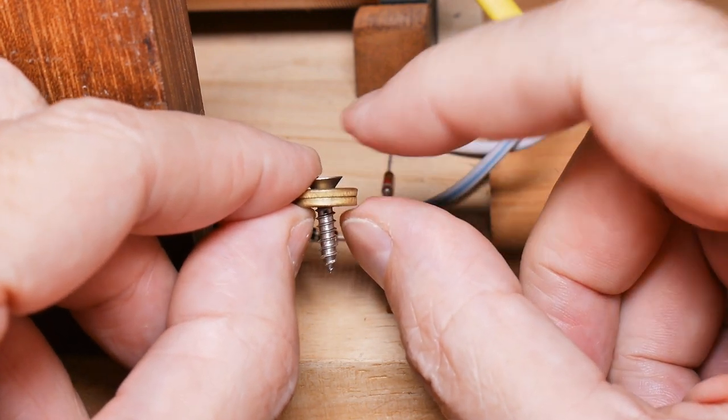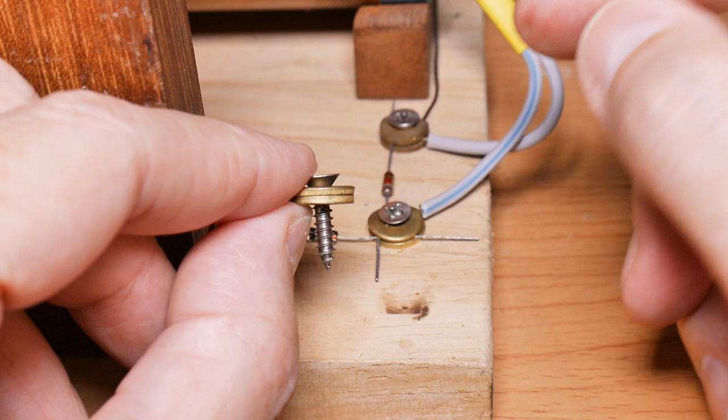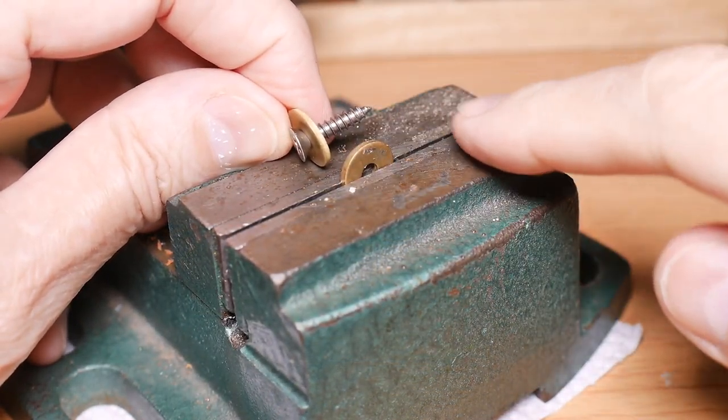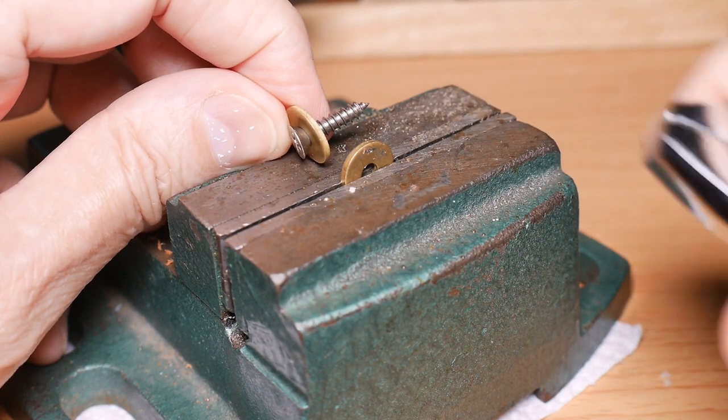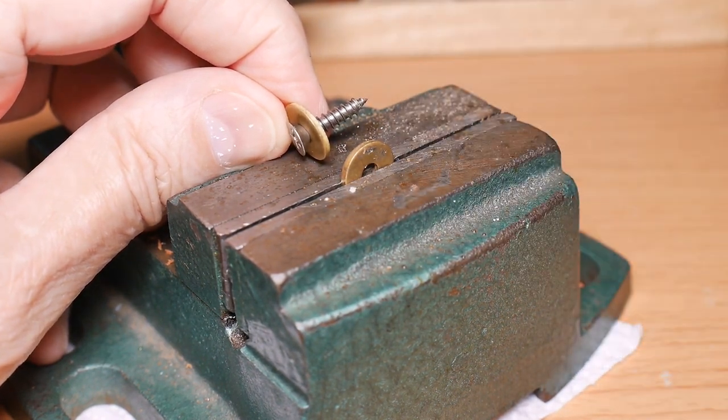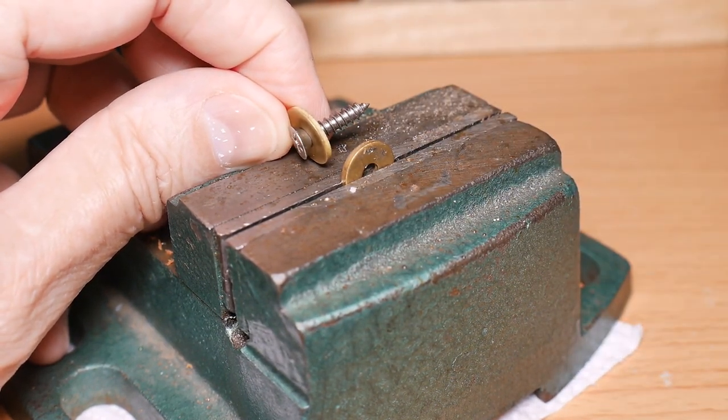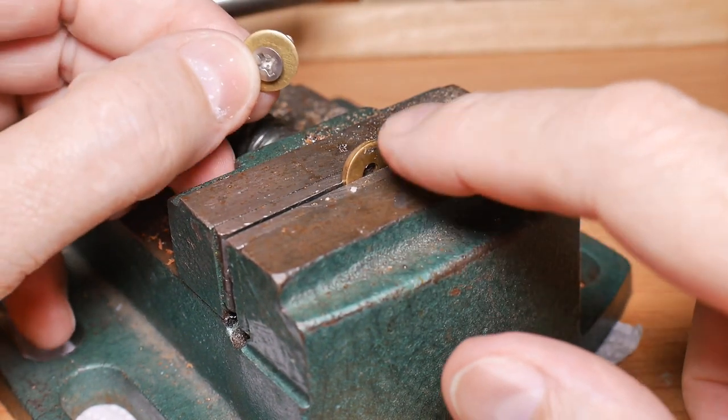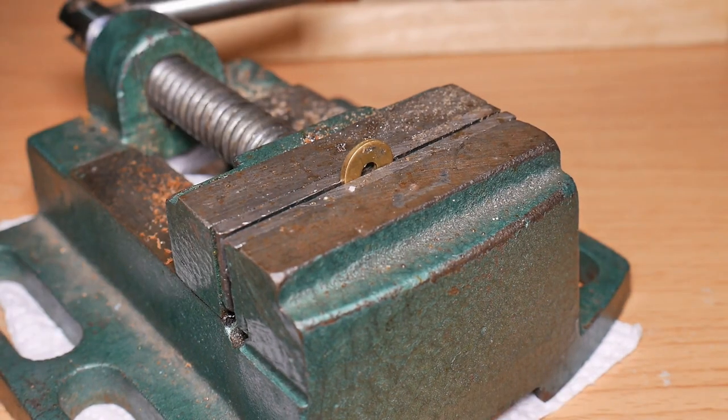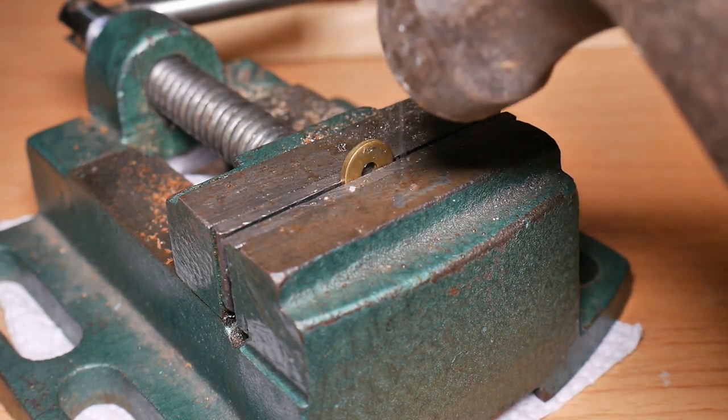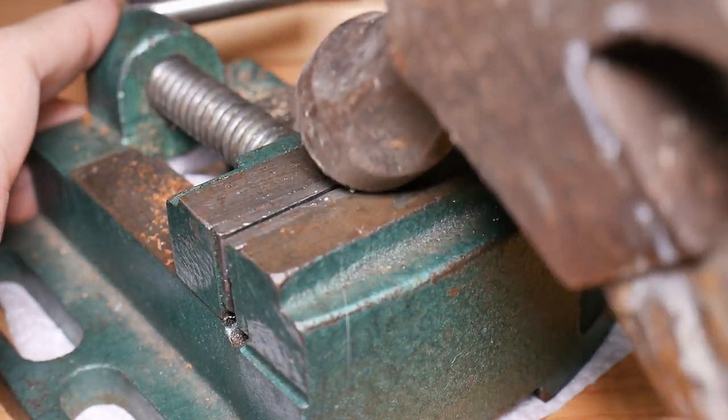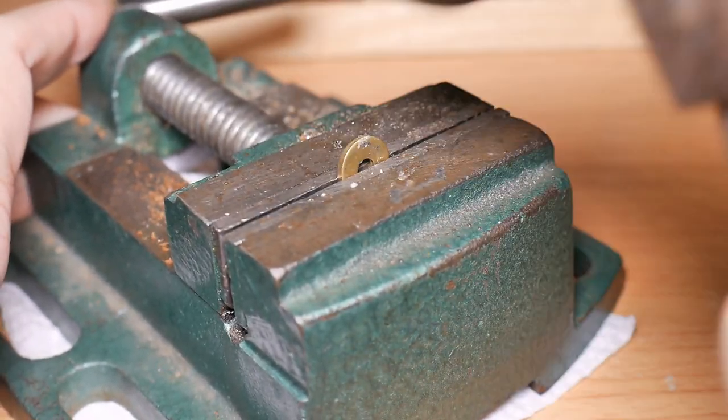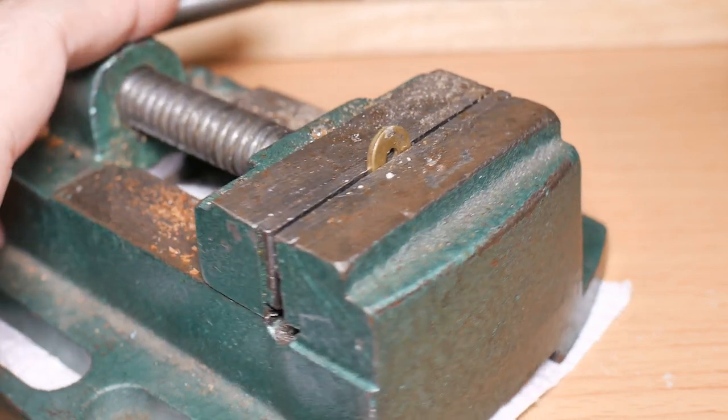Now what we're going to do is take one of our two washers and just bend it. You might be able to use pliers, but these are too thick. I haven't had any luck with pliers. I just got it clamped in the vise, a little bit more than halfway above, so all I'm going to do is tap it with a hammer. There's no trick to this.